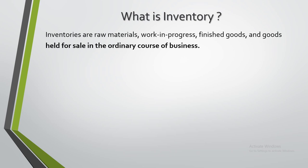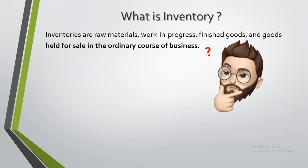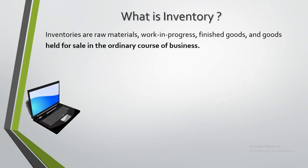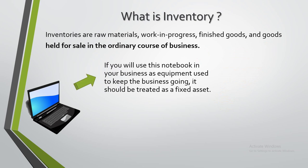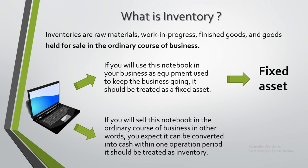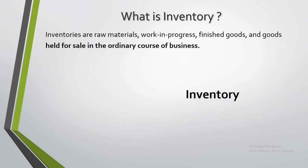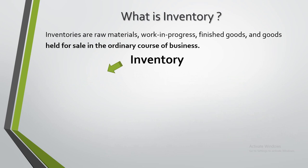The main point is that goods should be held for sale in the ordinary course of business. For example, suppose you bought a notebook. If you use this notebook in your business as equipment to keep the business going, it should be treated as a fixed asset. But if you sell this notebook in the ordinary course of your business — meaning you expect it to be converted into cash within one operating period — it should be treated as inventory.